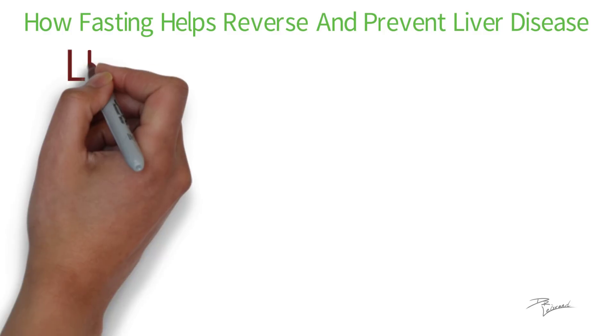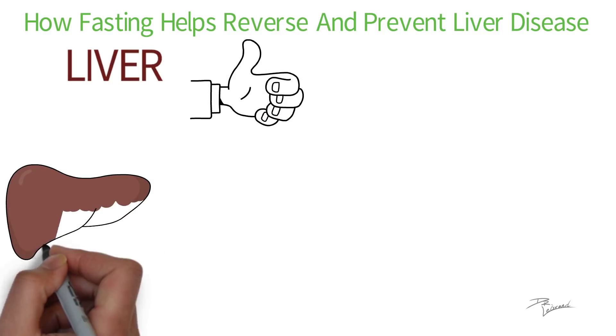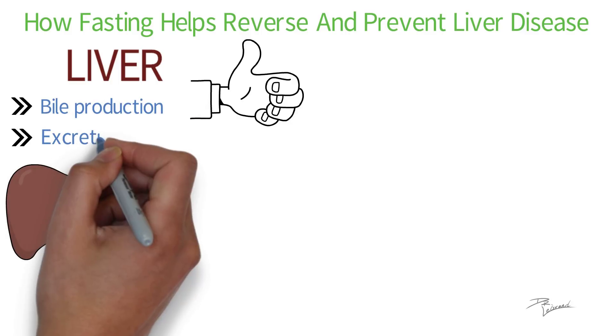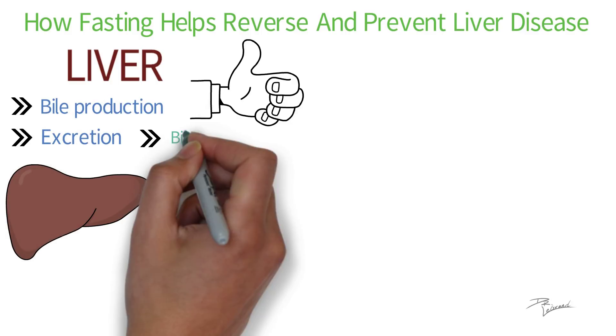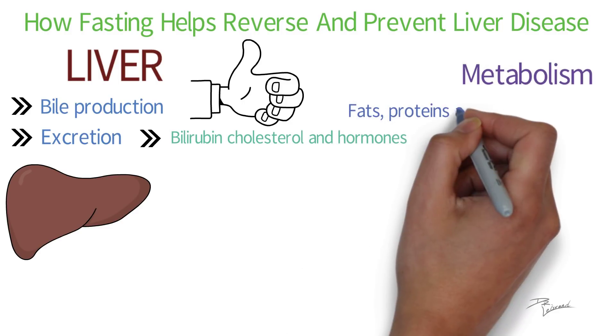The liver is known to play a major role in the body. The primary functions of the liver are bile production and excretion, excretion of bilirubin, cholesterol, and hormones, and metabolism of fats, proteins, and carbohydrates.